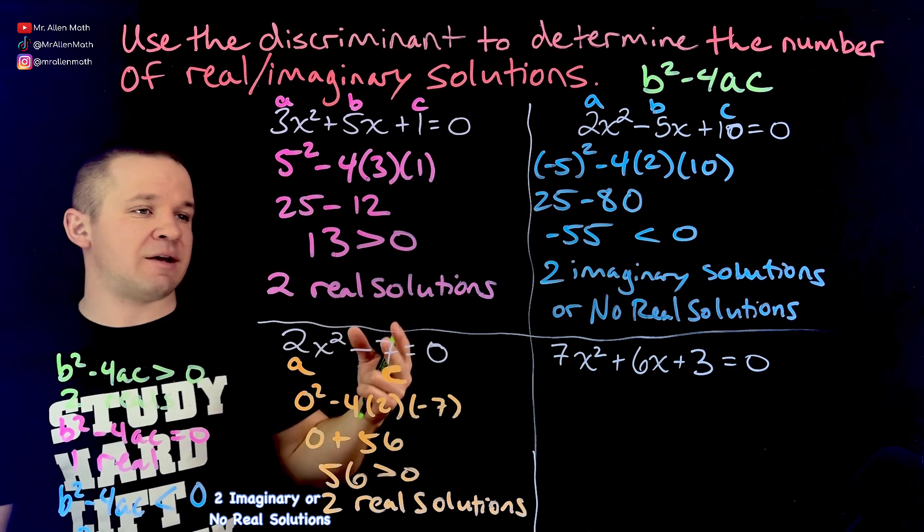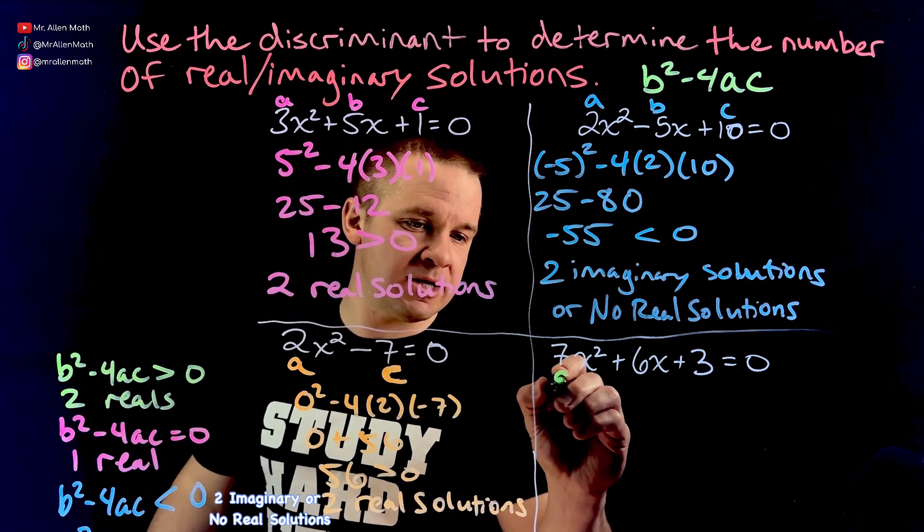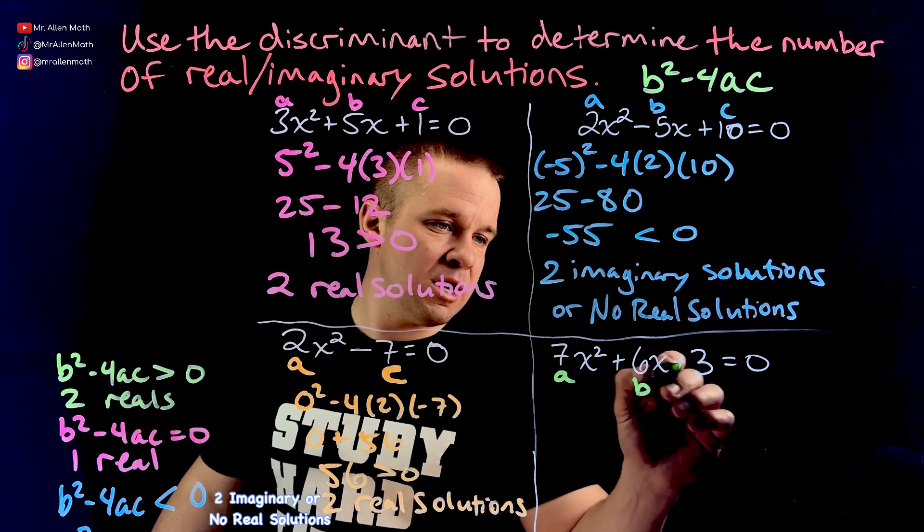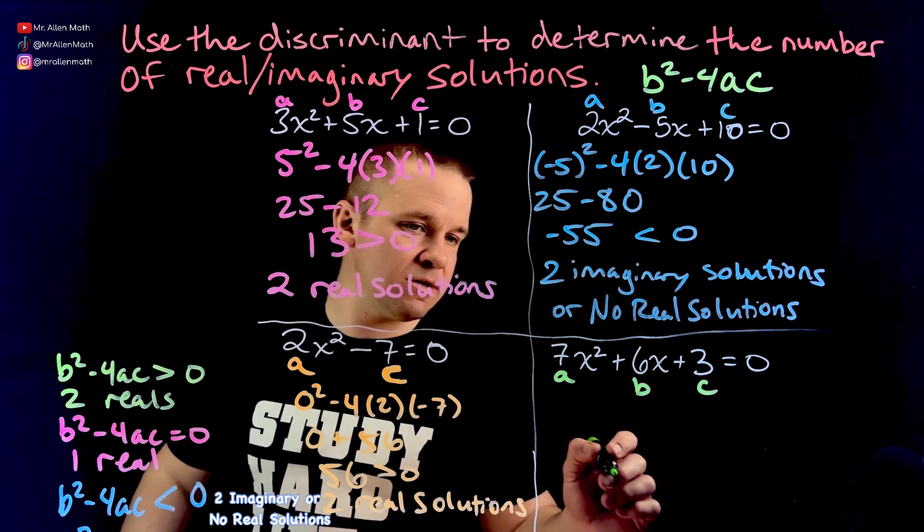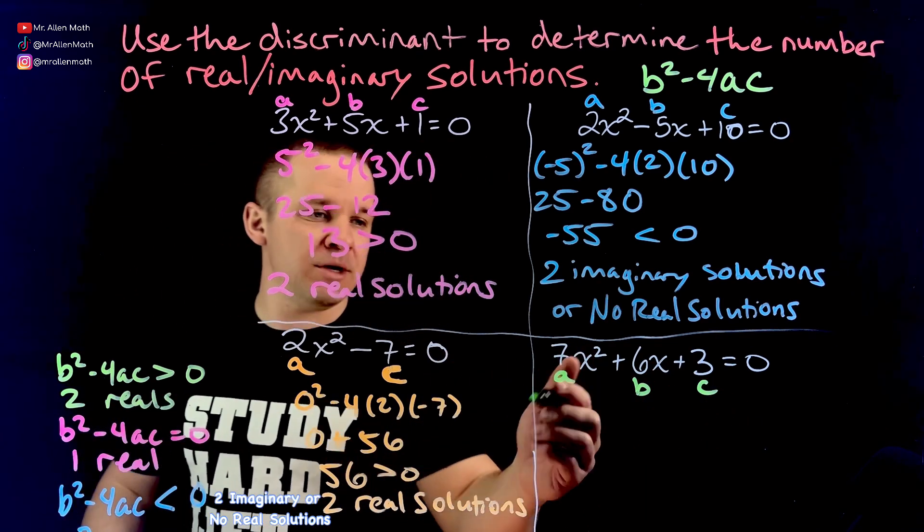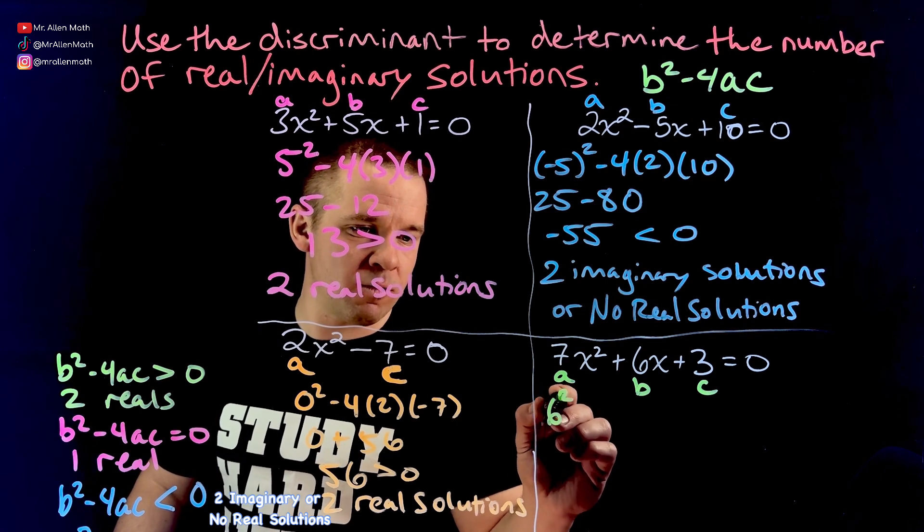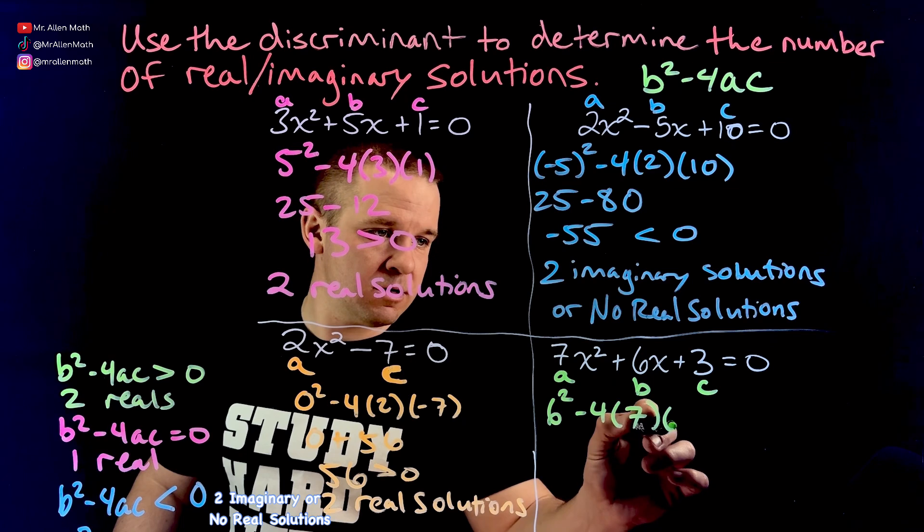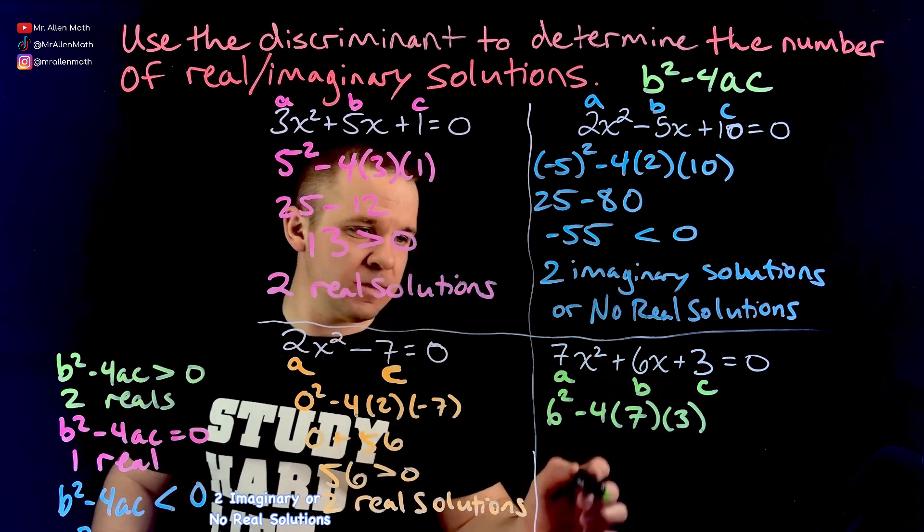We got a 7X squared. So this is my A. The seven is my A plus 6X. So B is the six plus three. So C is three. Let's plug it all in. B squared is 6 squared. Minus 4 times A times C.